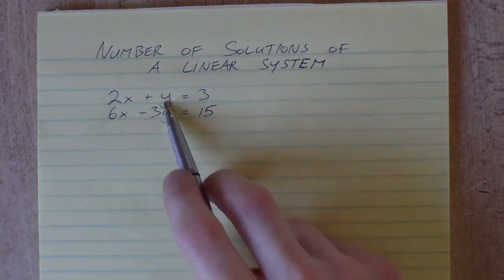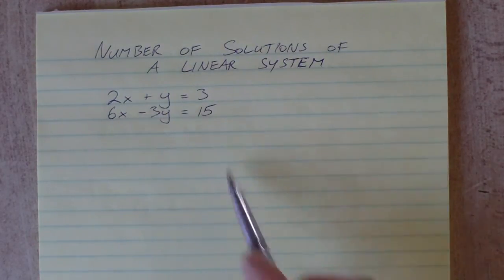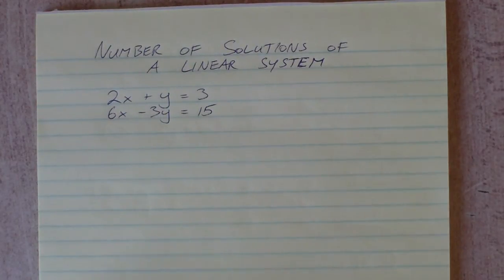Let's start with a linear system. We've got 2x plus y equals 3 and 6x minus 3y equals 15. Let's solve this using the algebraic method of addition or subtraction that we saw in the last video.